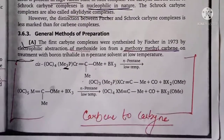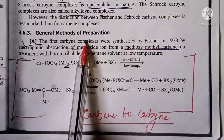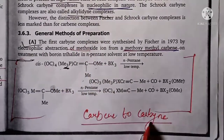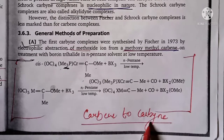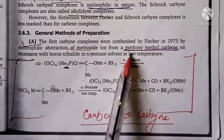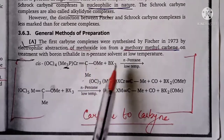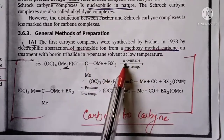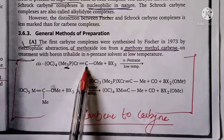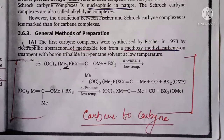If you have seen that video then there will not be any problem. Next is the method of preparation — how do we prepare it in the laboratory? The first method is carbene to carbyne conversion. Fischer's methoxy-methyl-carbene reacts with BX3 at low temperature, converting the double bond into a triple bond. This is very simple and you can easily learn it.